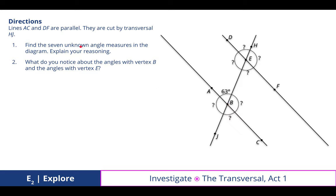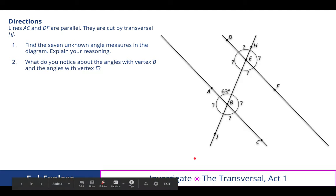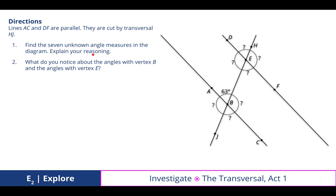Lines AC and DF are parallel. They are cut by a transversal HJ. Find the seven unknown angle measures in the diagram. Explain your reasoning. We did this in class. So here are the answers to that. And then what do you notice about the angles with vertex B and the angles with vertex E?